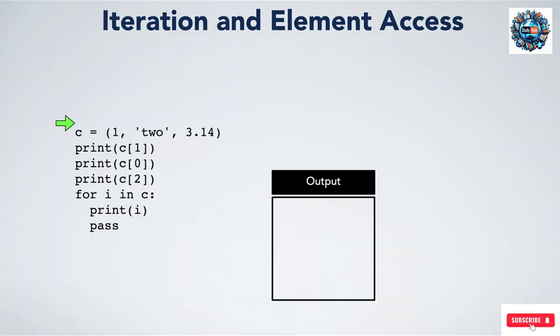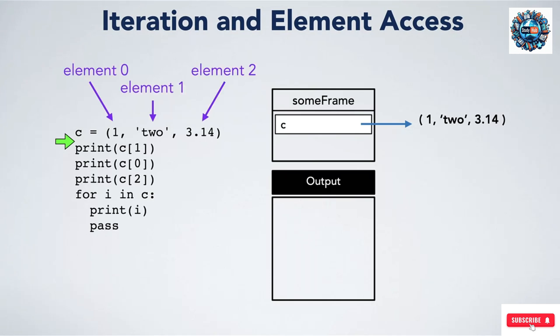We can access the elements of a tuple by indexing it with square brackets. To see this, let us start with a frame and create a tuple with three elements. On the next line we are going to print C square brackets 1, which is read C at 1. These square brackets index the tuple to get a particular element from it. Tuple indexing starts at 0, so element 1 is the second element in the tuple, in this case the string two.